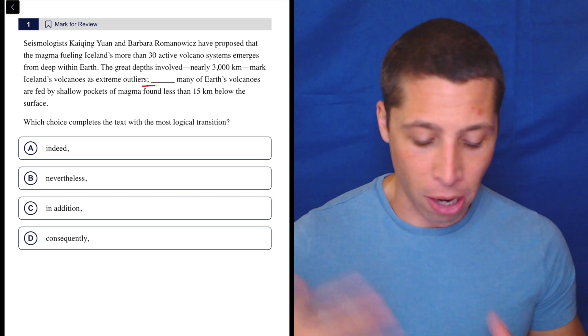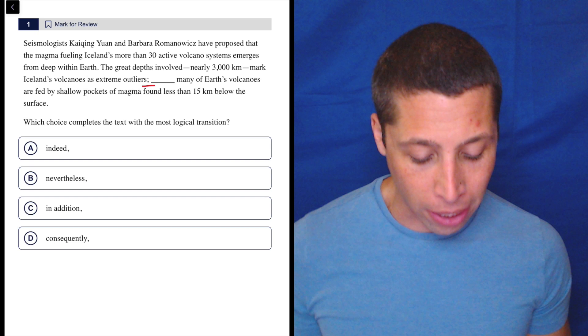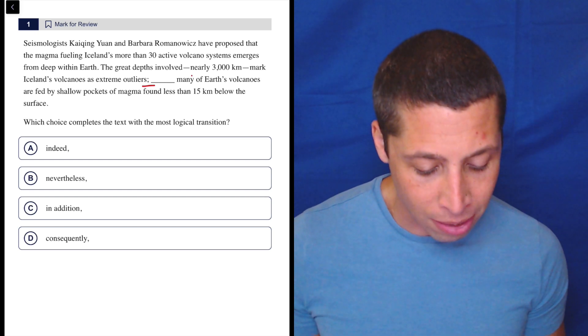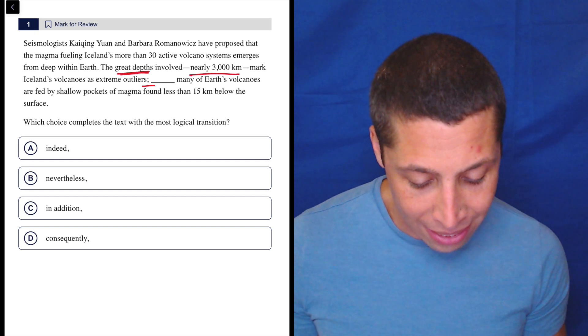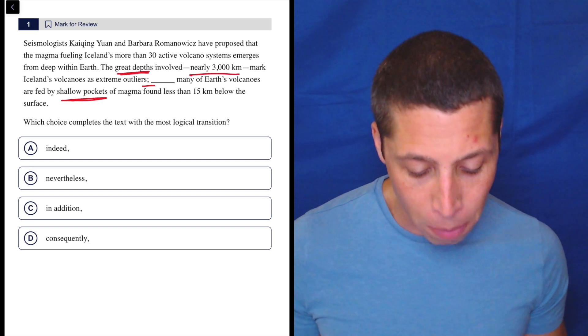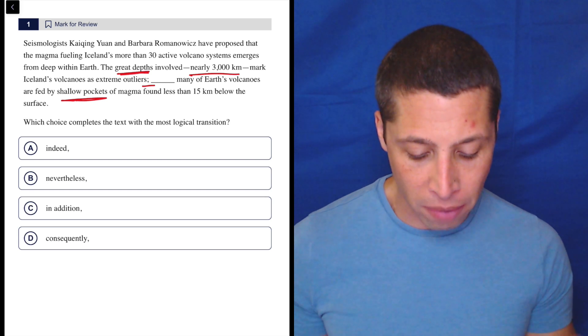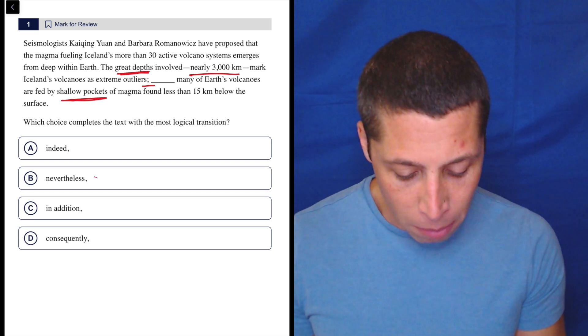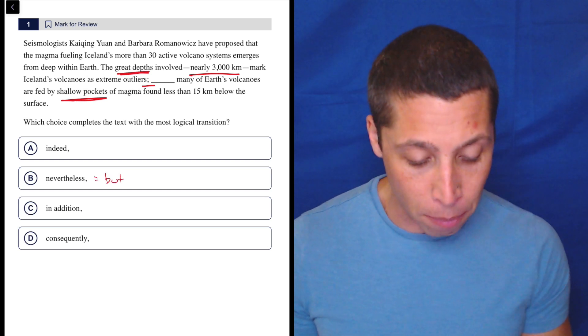So I'm kind of skipping some things here. I don't want to pronounce the names. It's just going to throw me off. But I'm going to try to read this sentence without this interruption. So there's great depths and then there's shallow pockets of magma, right? So there does seem to be a bit of a contrast. So that might take me to choices like B, right? That means but.